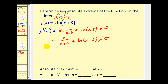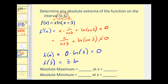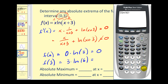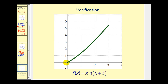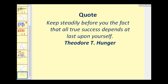We need f of zero and f of three. f of zero equals zero times ln(0+3), which is zero. f of three equals three times ln(3+3), or three times ln 6, which comes out to approximately 5.38. So we have an absolute maximum of 5.38 at x equals three, and an absolute minimum of zero at x equals zero. Since we can't solve the derivative equation on this interval, it's always a good idea to look at these graphically. The graph confirms that the endpoints produce both the absolute minimum and absolute maximum, with no critical numbers on the closed interval from zero to three.